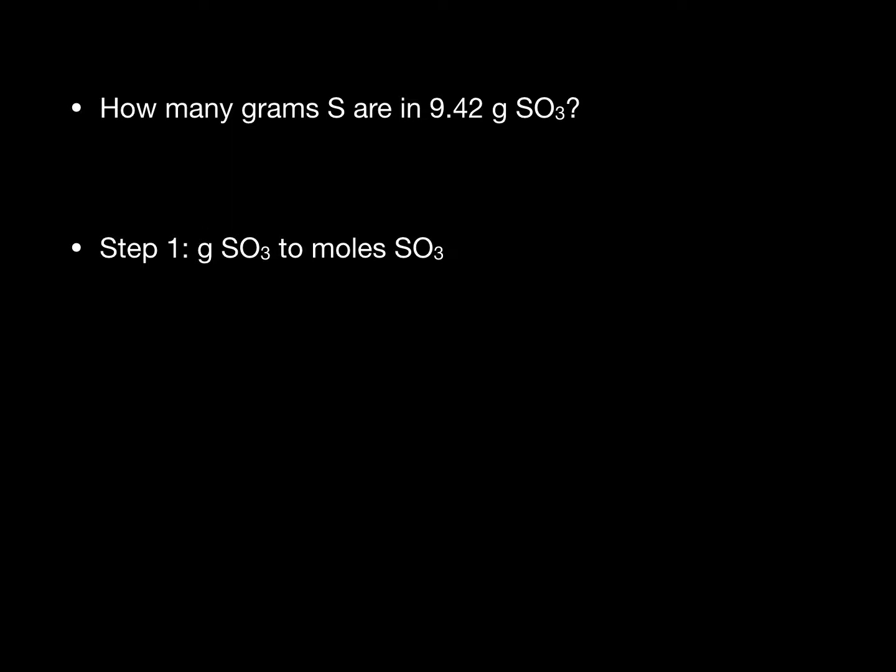First we will convert from grams of sulfur trioxide to moles of sulfur trioxide. We can do this with the molar masses of sulfur and oxygen from our periodic table.